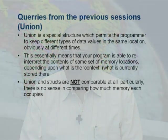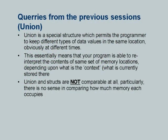Thanks to the person who pointed out that unions apparently require less storage than structs, and asked why we prefer structs over unions. A union actually does not accommodate all the components defined in it simultaneously. It is a spatial structure that permits the programmer to keep different types of data values in the same location — obviously not at the same time.